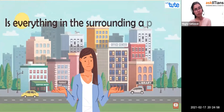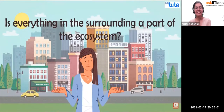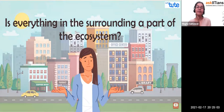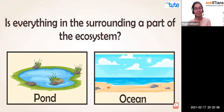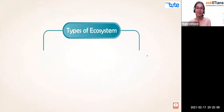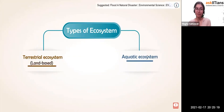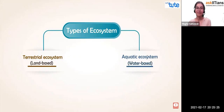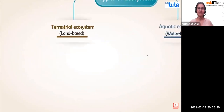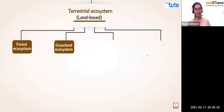In our surroundings there are many living and non-living things that coexist and constantly interact — this is what an ecosystem is. An ecosystem is a community of life forms in concurrence with non-living components interacting with each other. The term ecosystem was first coined by English scientist A.G. Tansley in the year 1935. An ecosystem could be anything from a small pond to a large ocean.